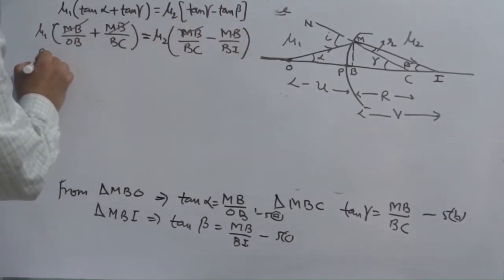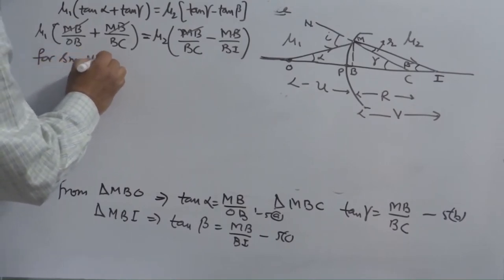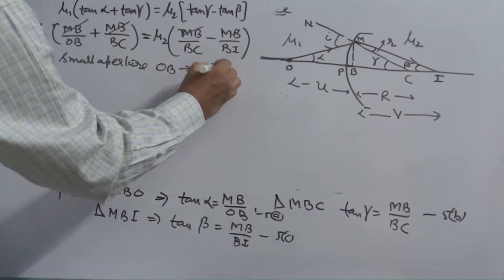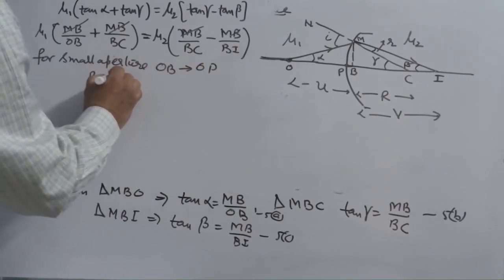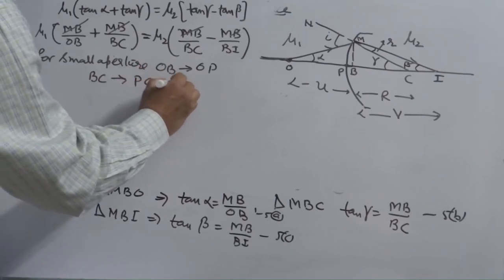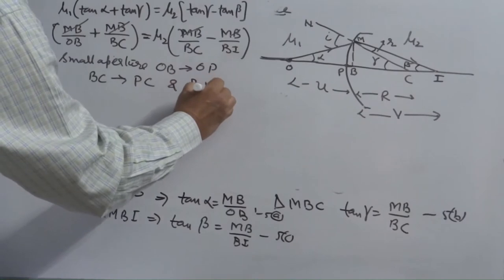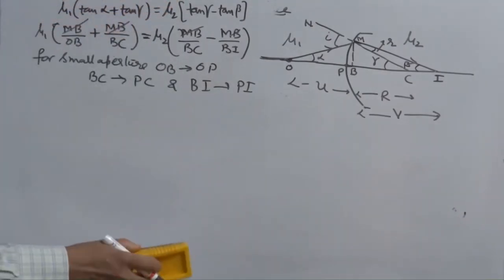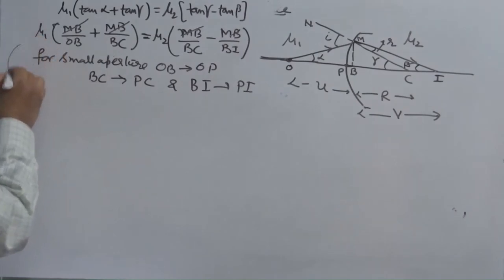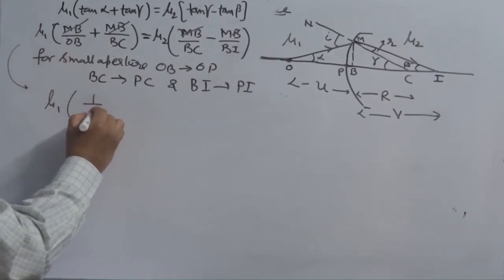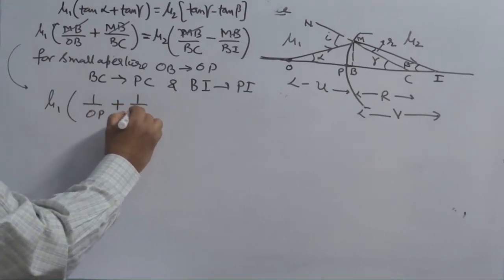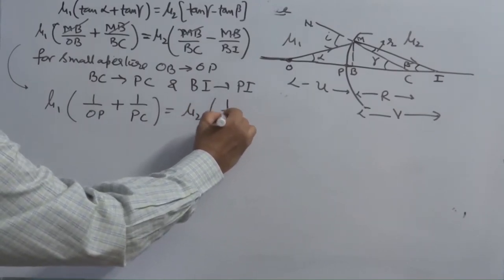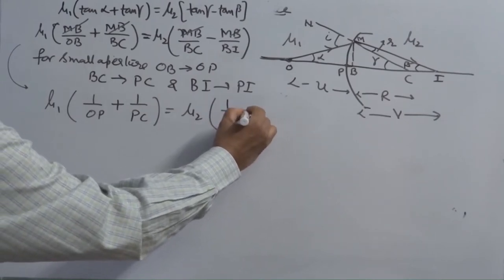And for small aperture, O, B tends to OP and BC tends to PC and PI tends to PI. So, this equation will become, this equation will turn to mu 1, 1 over OB is OP plus 1 over BC is PC. Mu 2, 1 over PC minus 1 over PI.